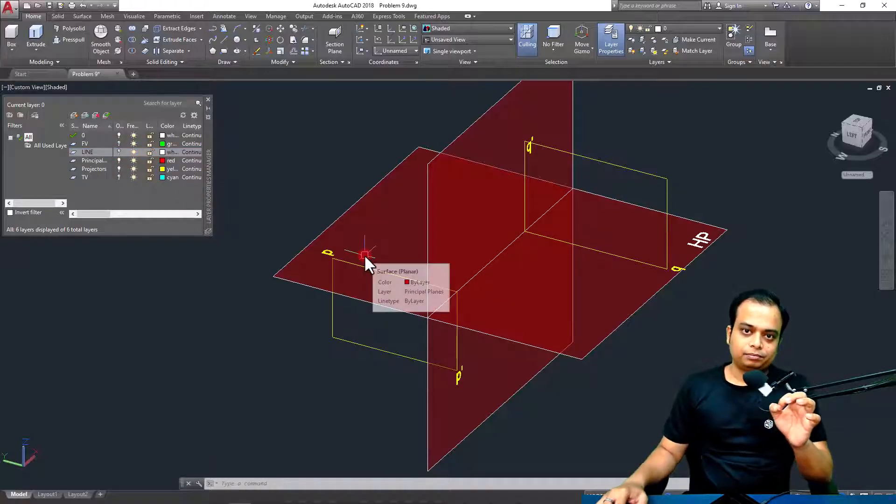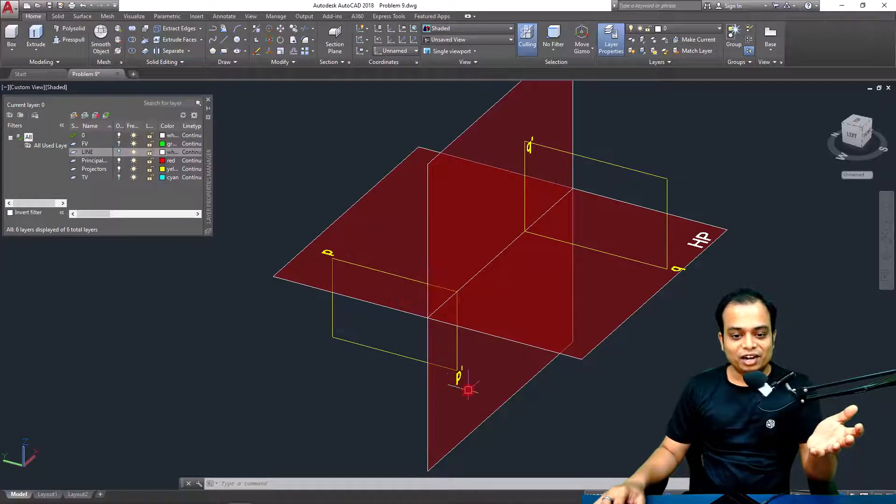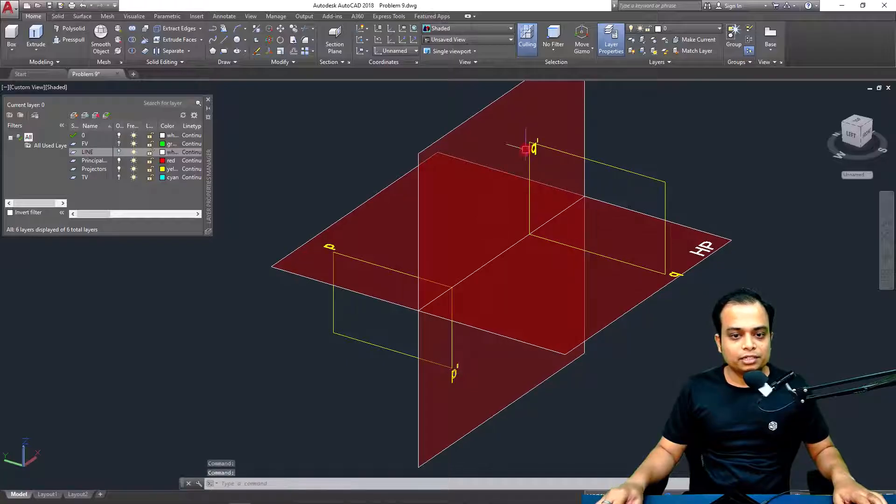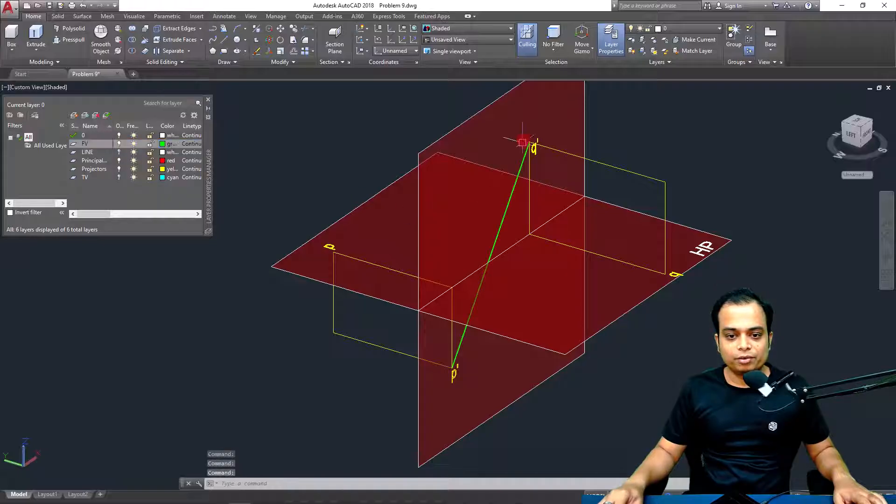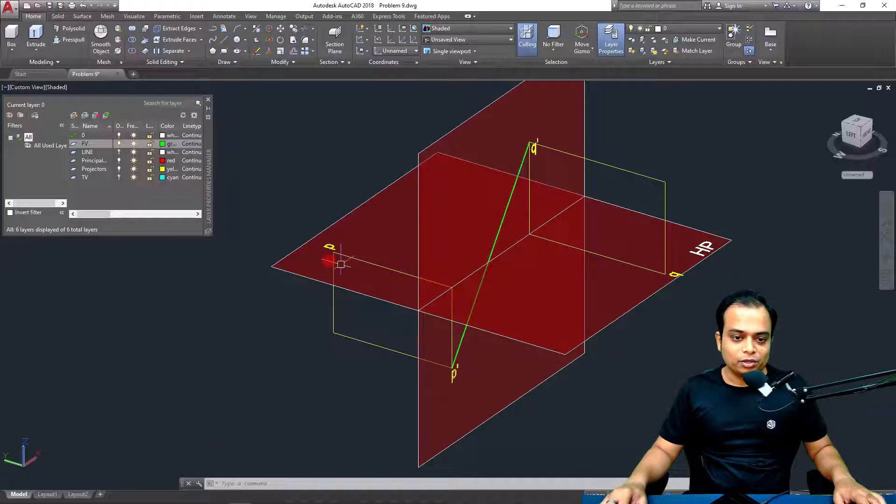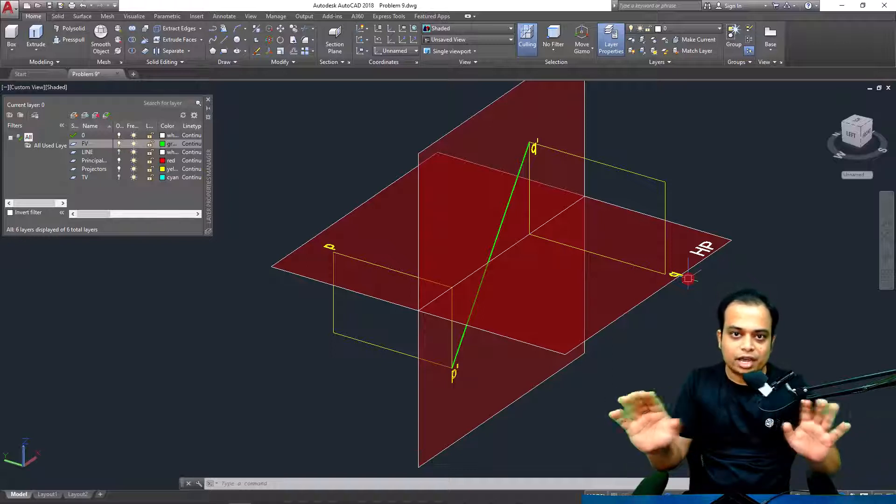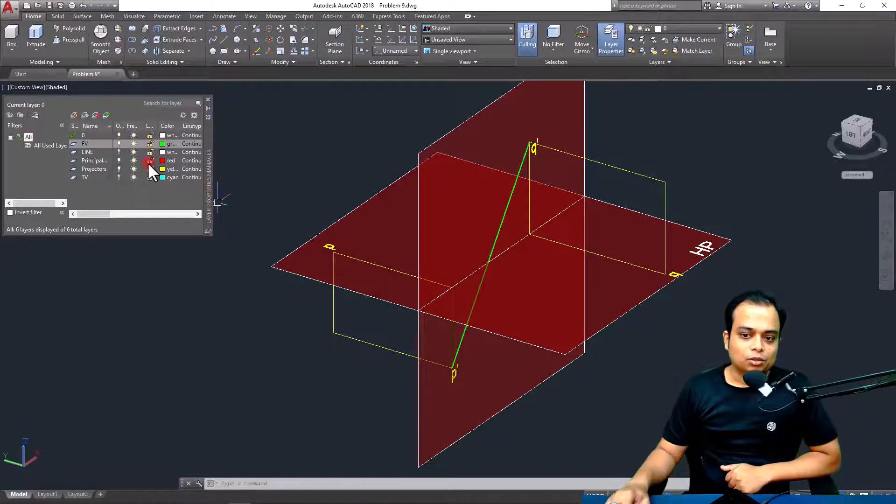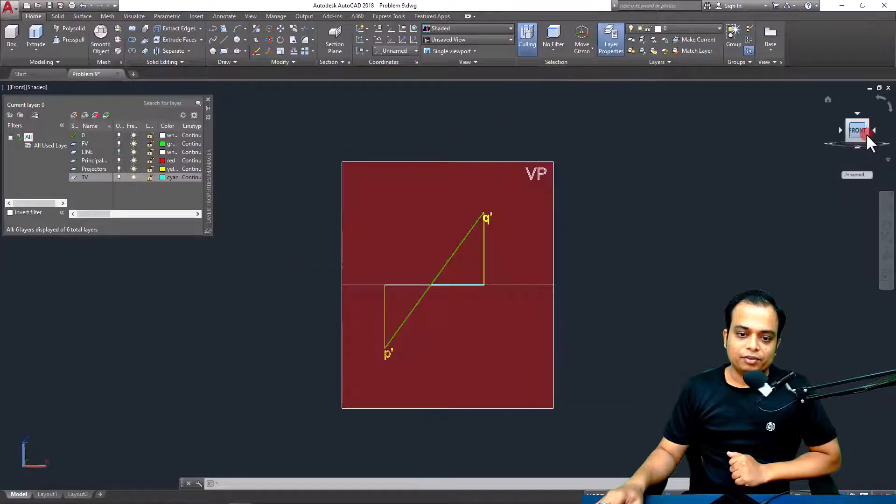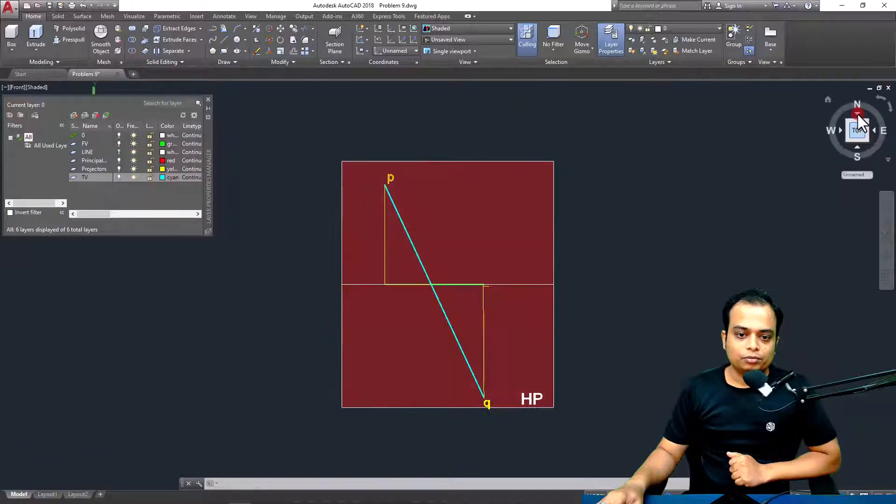If you have to make the final front view, when you connect P dash with Q dash, it is going to look something like this. This is going to be the final front view in green. And when you make the final top view, you join P with Q. Front views are dashes. Top views, no dashes. This is what you've got to make. That's the front view and that's the top view.